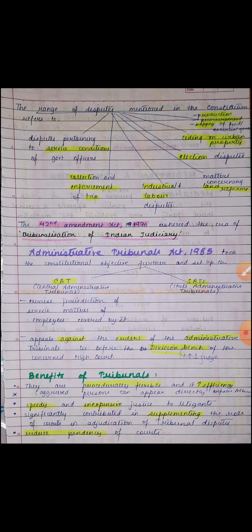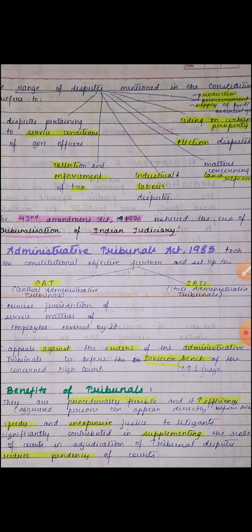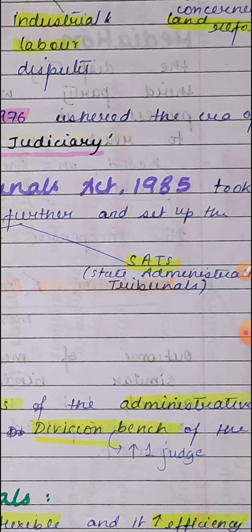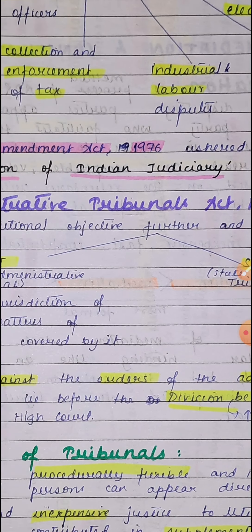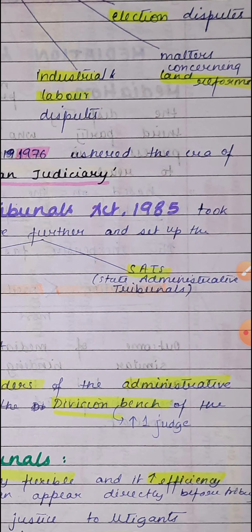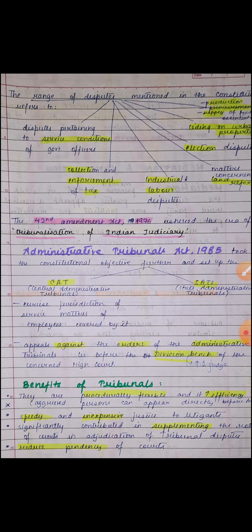The 42nd Amendment Act of 1976 ushered in the era of 'tribunalization' of the Indian judiciary. In 1985 — the same year the UNCITRAL Model Law was passed — the Administrative Tribunals Act was also passed in India for setting up the CAT (Central Administrative Tribunal) and SATs (State Administrative Tribunals). The CAT settles disputes of central government employees about their service conditions; the SATs settle disputes of state government employees.